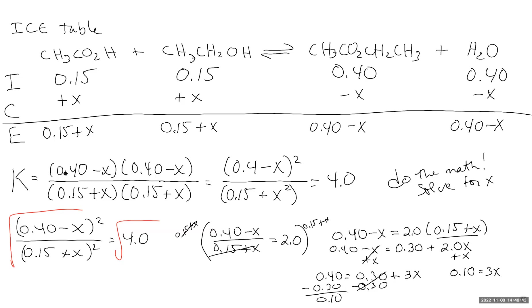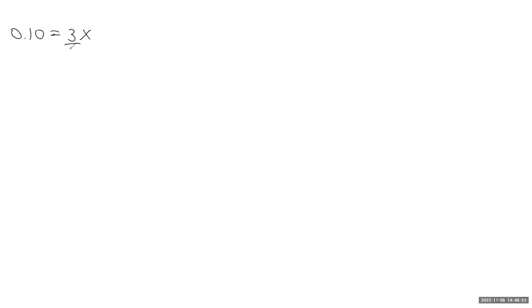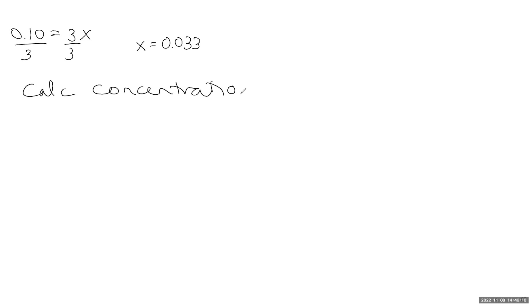From 0.10 = 3x, we divide both sides by 3 to get x = 0.033 (to two significant figures). Now that we have our value for x, we're ready to calculate the equilibrium concentrations.